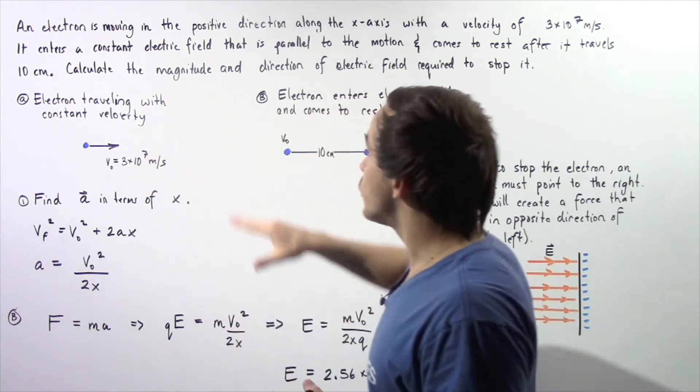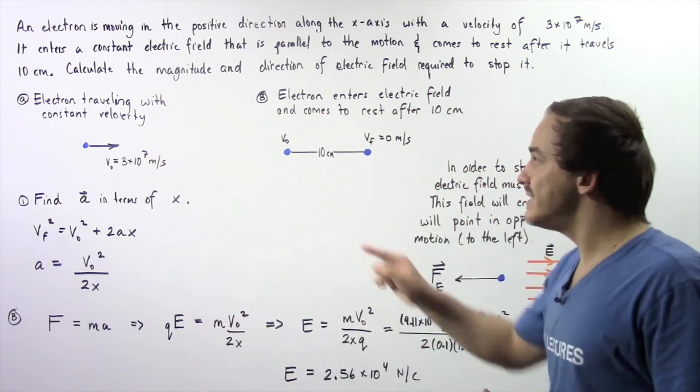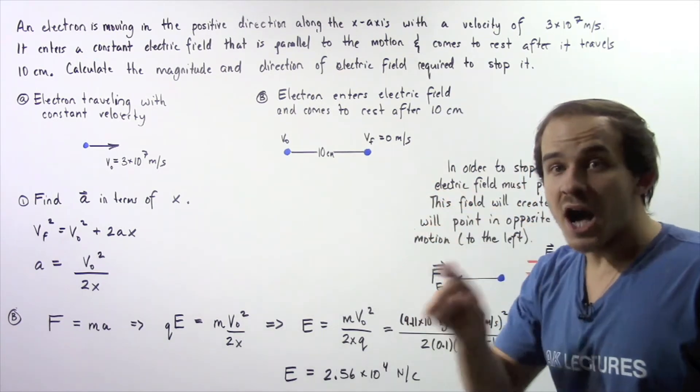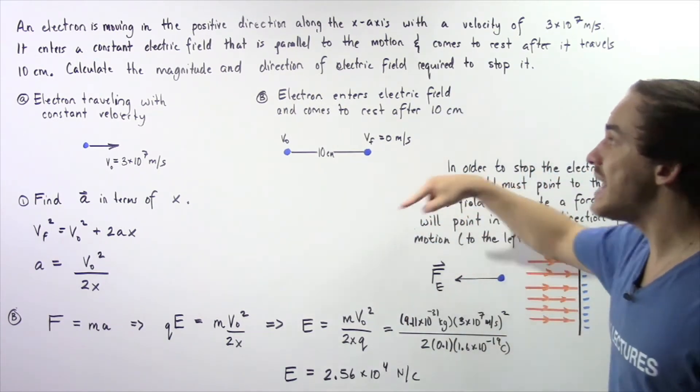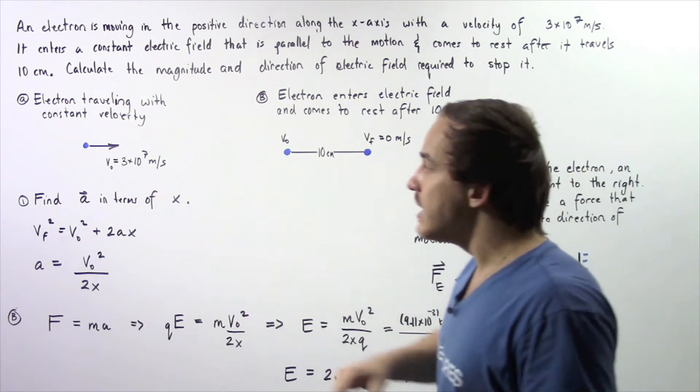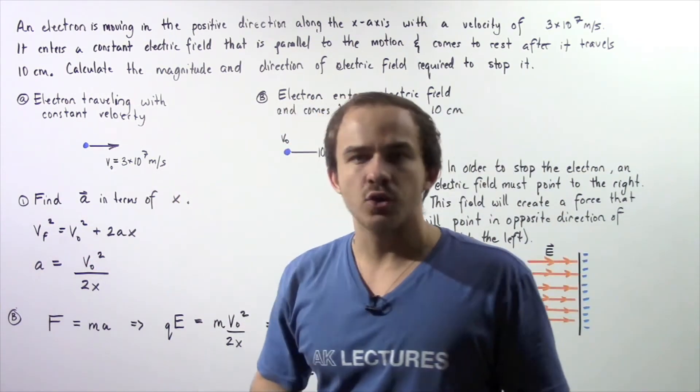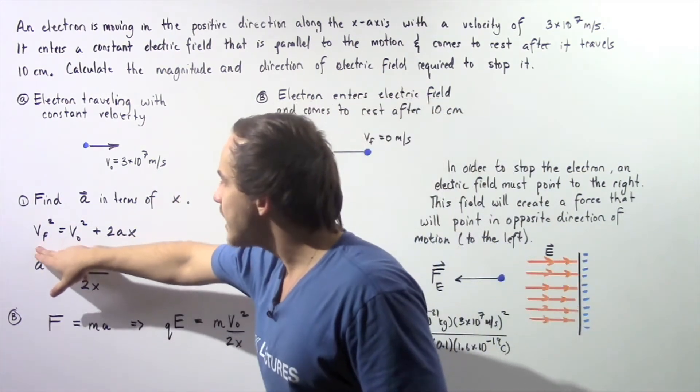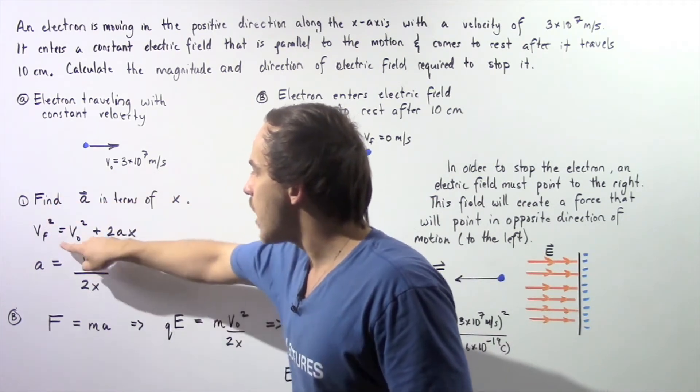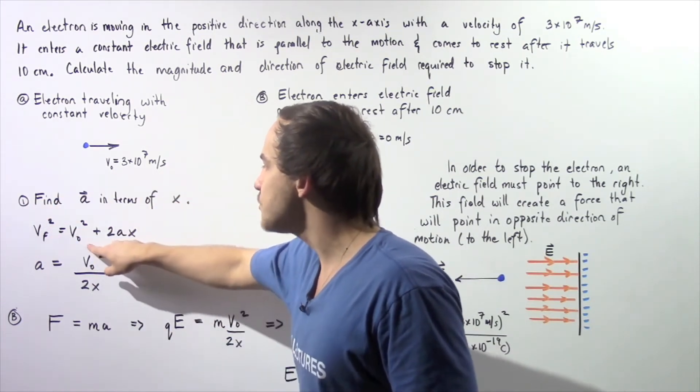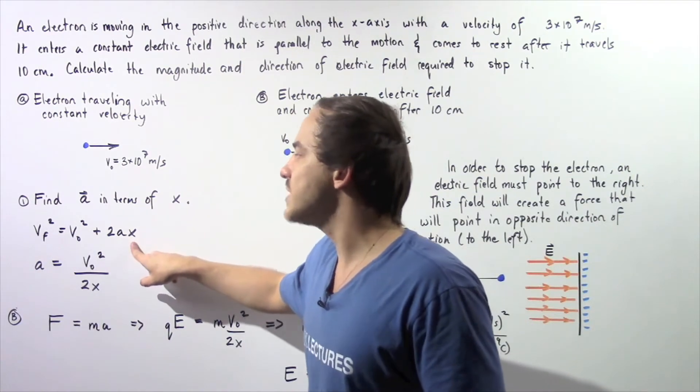Because we're dealing with a constant deceleration (our electric field and therefore our force is constant), we can use the kinematics equation. Our final velocity squared equals our initial velocity squared plus 2ax.